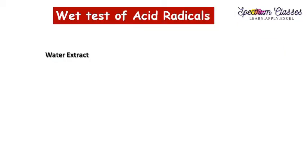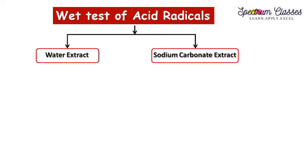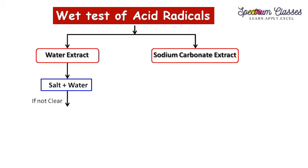Now I am showing how we are going to perform the wet test for acid radicals in the laboratory. Before proceeding with the wet test, we have to prepare either the water extract or the sodium carbonate extract. For water extract: take salt plus distilled water — if we get a clear solution, that is termed the water extract. If it is not clear, we heat it until we get a clear solution, which is then known as the water extract.